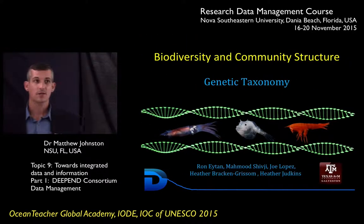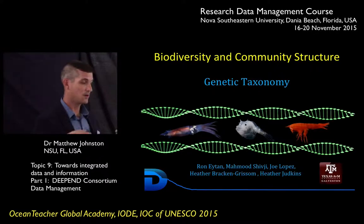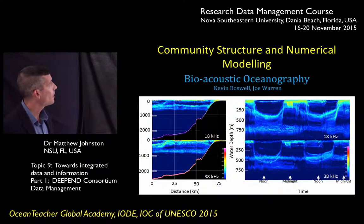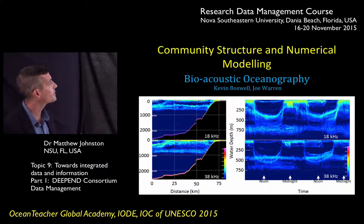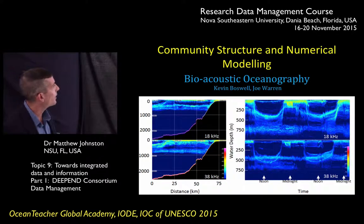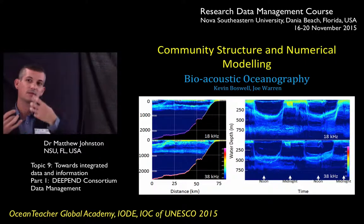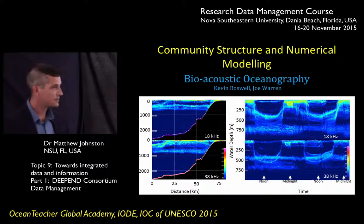We're also doing genetics — everything we collect we're not only identifying, but if we don't know the genetics of it, we're running those tests as well. Genetic testing creates massive amounts of data. For bioacoustic oceanography, we have an investigator using acoustics to sample the water column. He can actually determine that these layers are schools of fish and can determine the density and sometimes even the sizes of the fish. This is a large amount of data produced on every single cruise.